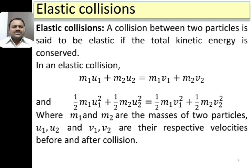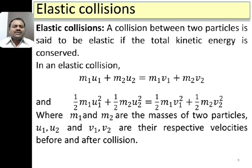A collision between two particles is said to be elastic if the total kinetic energy is conserved. In an elastic collision, linear momentum is conserved. If m₁ and m₂ are the masses of two particles, u₁ and u₂ are their initial velocities, and v₁ and v₂ are their final velocities after collision, then by the law of conservation of momentum: m₁u₁ + m₂u₂ = m₁v₁ + m₂v₂. In an elastic collision, kinetic energy is also conserved.